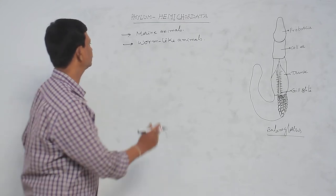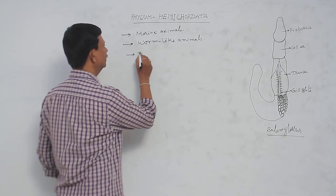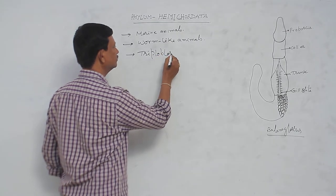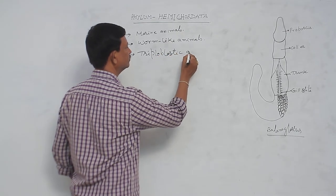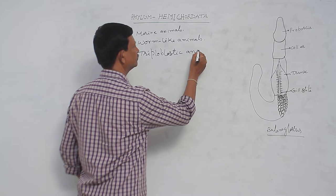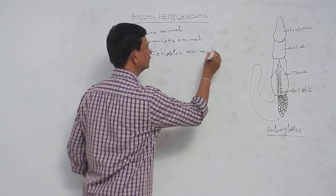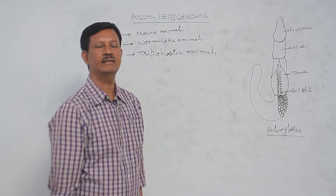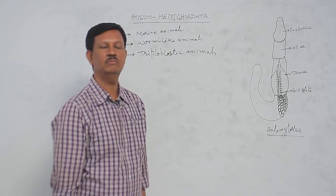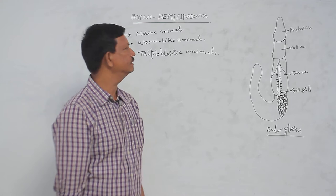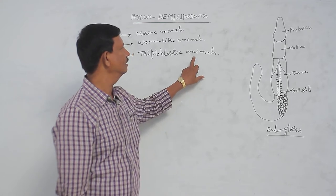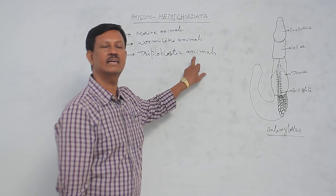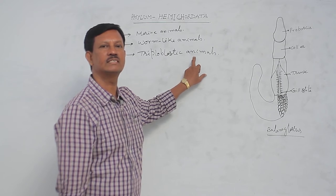They are triploblastic animals, meaning three primary germ layers are present: ectoderm, endoderm, and mesoderm. These three layers are present during development and gradually develop into the different systems of the body.